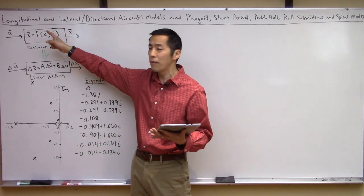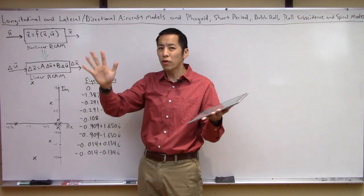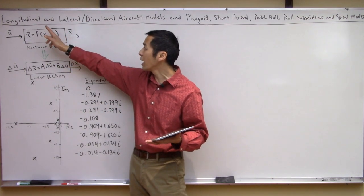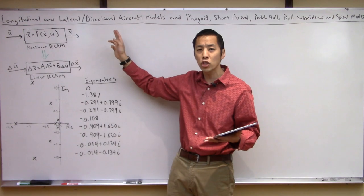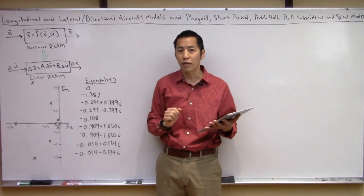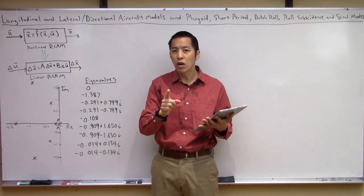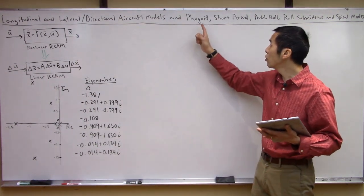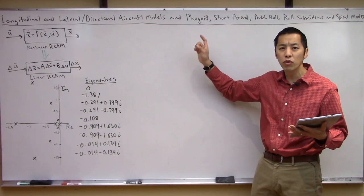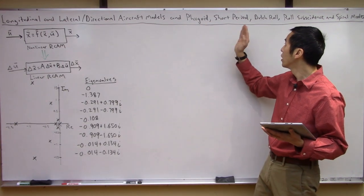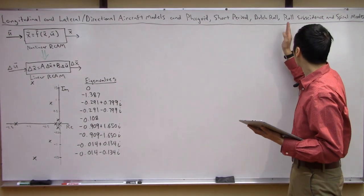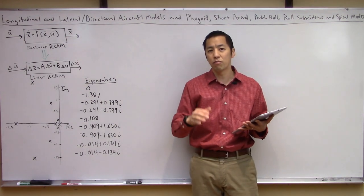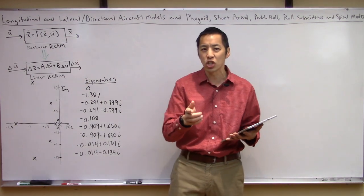What's exciting about today is we're going to analyze and take a closer look at that system and try to identify and characterize its behavior from a mathematical perspective. Today's video title is the longest I've ever had. It's sort of a two-parter: first, building a longitudinal and lateral directional model of the aircraft, and then investigating the characteristic modes — namely the phugoid, the short period, the Dutch roll, the roll subsidence, and the spiral modes.